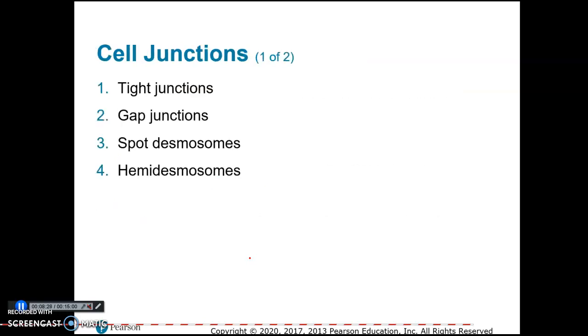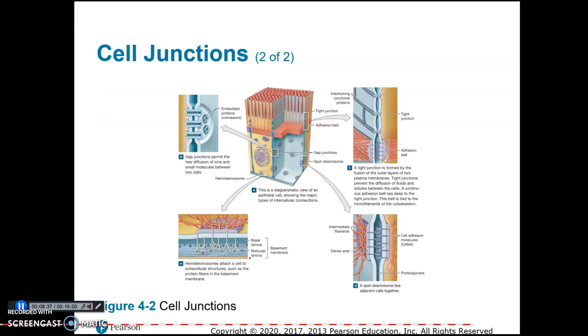The types of cell junctions are called tight junctions, gap junctions, desmosomes, and hemidesmosomes. Let's look at the different ones.